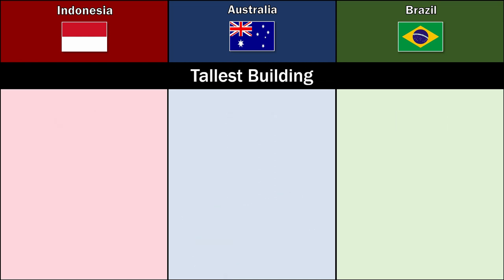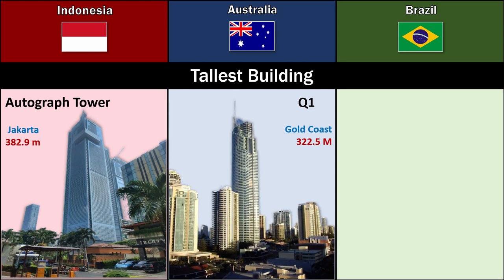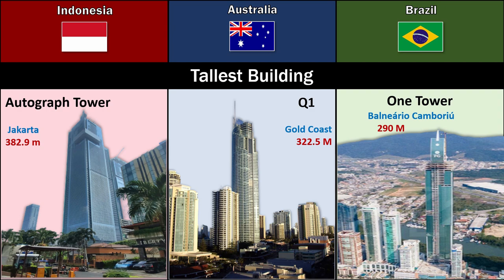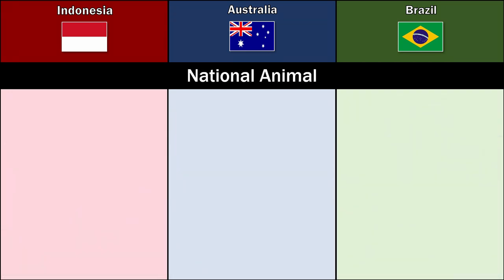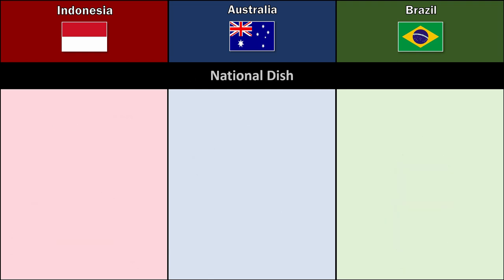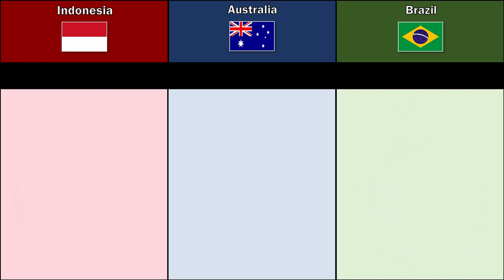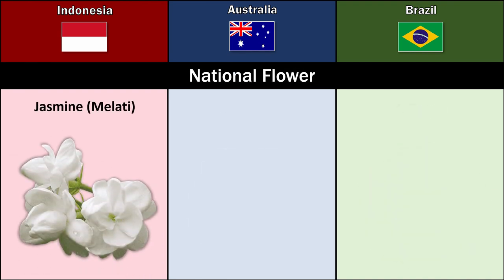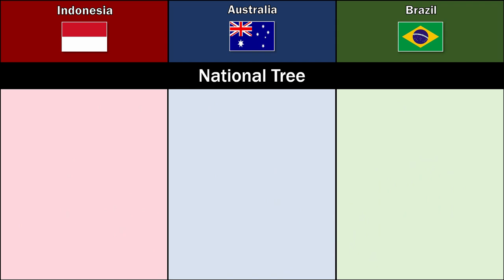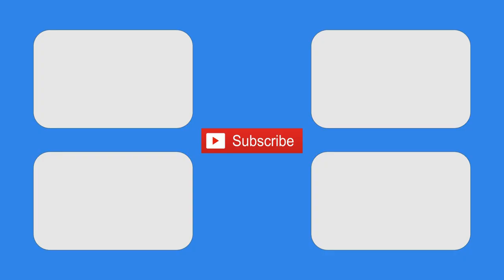Tallest Building: Autograph Tower Jakarta 382.9 meters, Q1 Gold Coast 322.5 meters, One Tower Balneario Camboriu 290 meters. National Animal: Komodo Dragon, Kangaroo, Jaguar. National Dish: Rendang, Roast Lamb, Feijoada. National Flower: Jasmine, Golden Wattle, Ipe Amarelo. National Tree: Teak Tree, Golden Wattle Tree, Pau Brazil Tree. Thanks for watching, please subscribe to this channel.